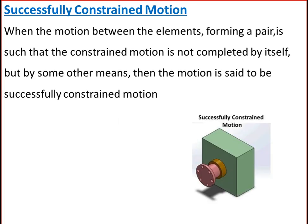The third type is successfully constrained motion. When the motion between elements forming a pair is such that the constraint is not completed by itself but by some other means, the motion is said to be successfully constrained. Consider a shaft in a footstep bearing: the shaft may rotate or move upwards — this is incompletely constrained — but if a load is placed on the shaft to prevent axial upward movement, the motion becomes successfully constrained. The motion of an IC engine valve kept on its seat by a spring, and a piston reciprocating inside an engine cylinder, are also examples.